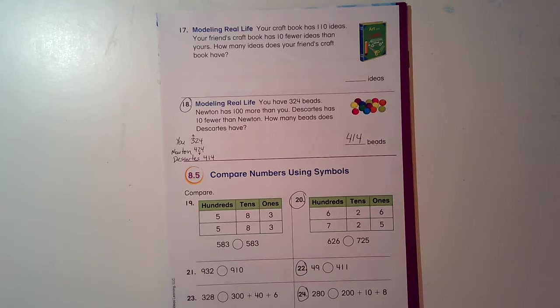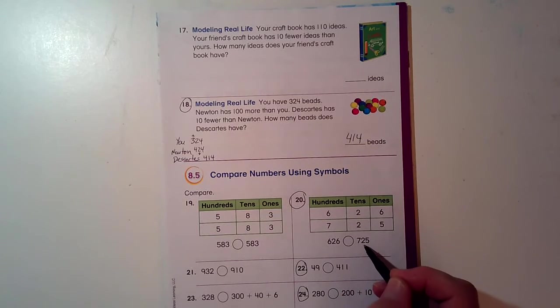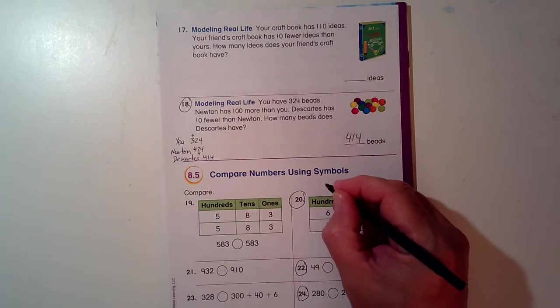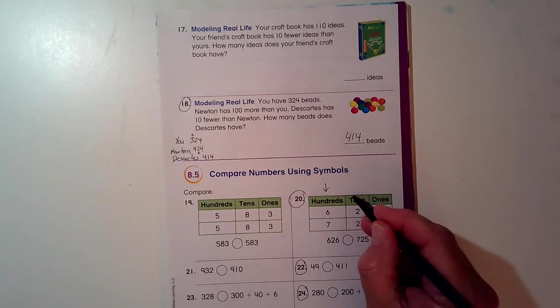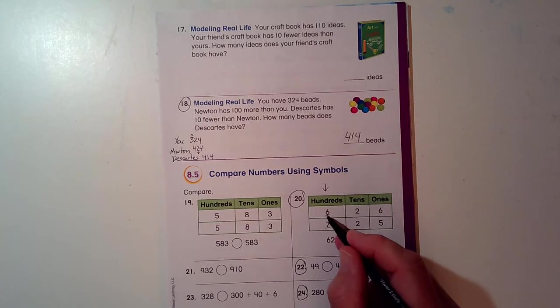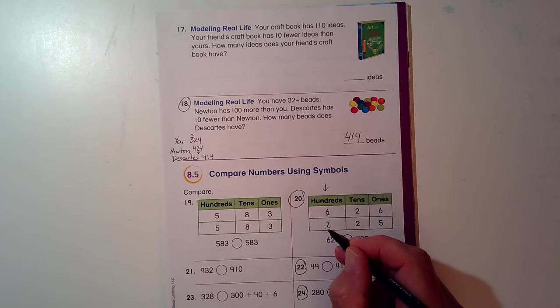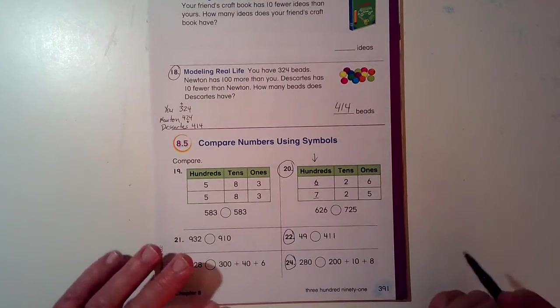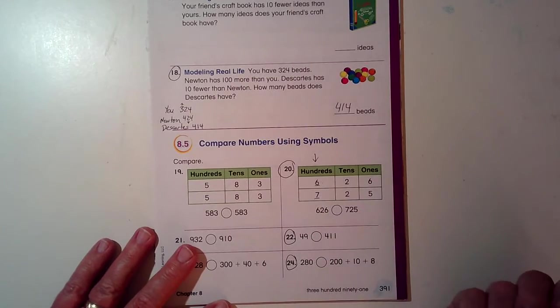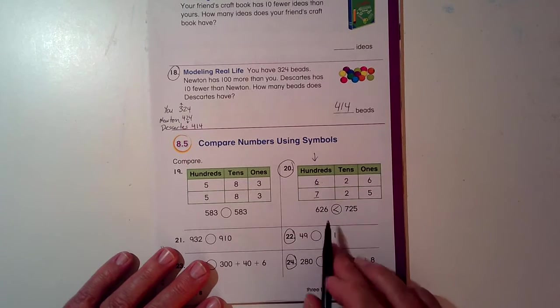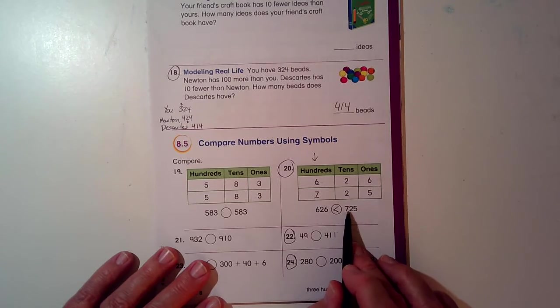The next even problem. Compare these two numbers, 626 and 725. I look at the biggest numbers first, the biggest place value first, the hundreds, then the tens, then the ones. 6 and 7. Well, I can stop, because I know that 6 is less than 7, and no matter what these say, they're not going to make the 6 any bigger than the 7. So I know that my symbol opens up towards the 725, and I read it like this: 626 is less than 725.